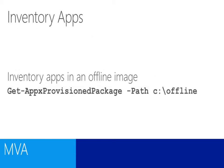We can also query apps in an image which is not currently online — so we can do that to an offline image. In order to do that, we would first mount the image and then use the Get-AppxPackage command in order to go and grab details of everything that's been provisioned as part of a particular image.